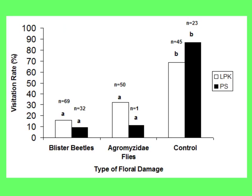With the butterfly pea question: do bees visit those flowers? We might hypothesize, no, they don't. Setting up systematic observation on damaged versus undamaged flowers, we could see what the visitation rate of bees is to these different kinds of flowers. Here are two different sites — Long Pine Key and Pine Shore. The first set of bars shows the proportion of flowers damaged by blister beetles that are visited by bees. The second set shows the proportion of flowers with petals sucked by flies that are visited by bees. And the control — undamaged flowers — shows the visitation rate to undamaged flowers is much higher. So the hypothesis that damaged flowers get fewer visits would be upheld.